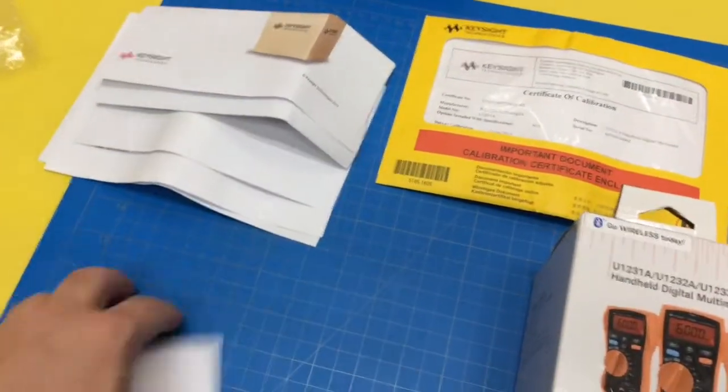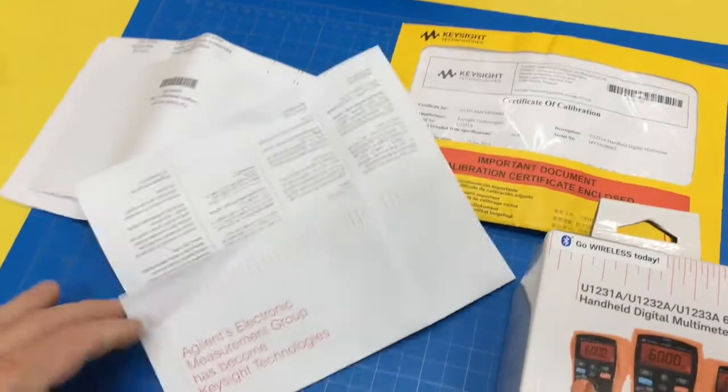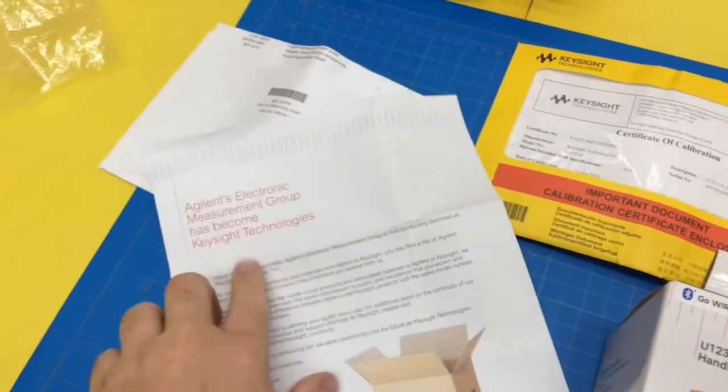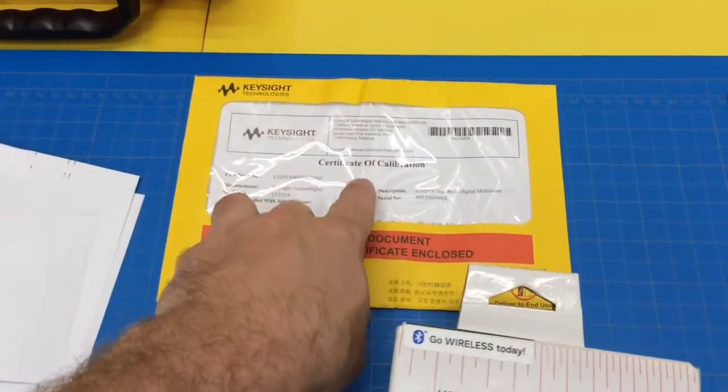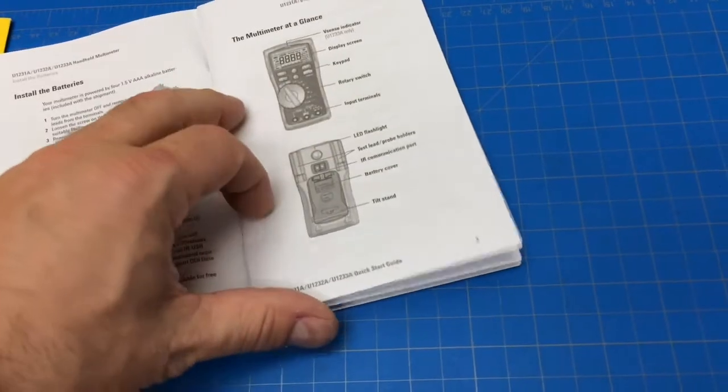Okay, so we got a little bit of paperwork with it. Nothing too important. Agilent has become Keysight. Some calibration certification. And then a little quick start guide.